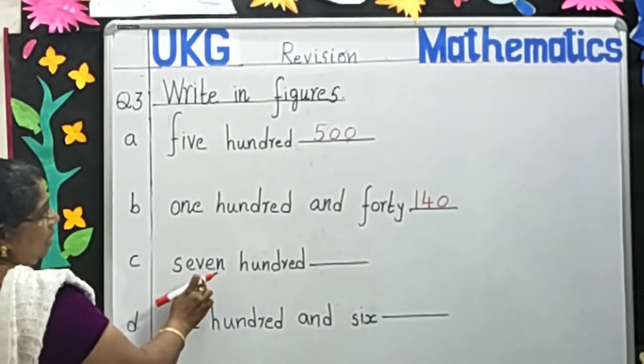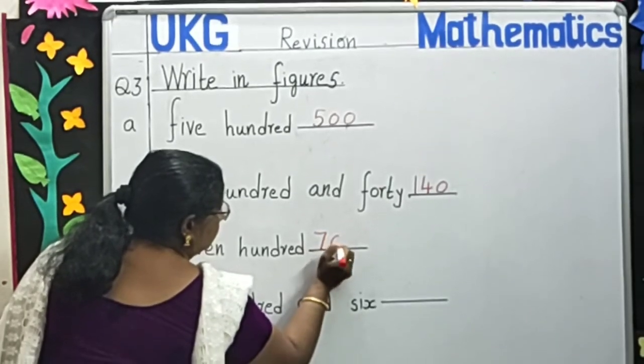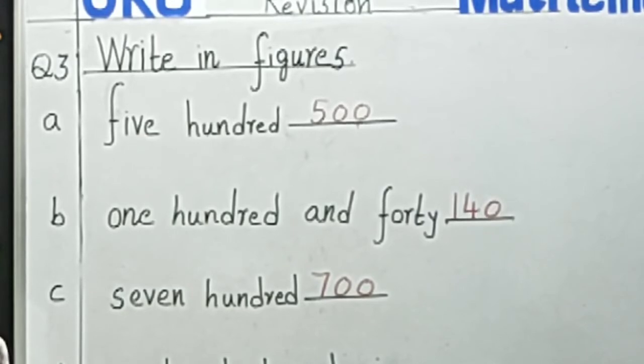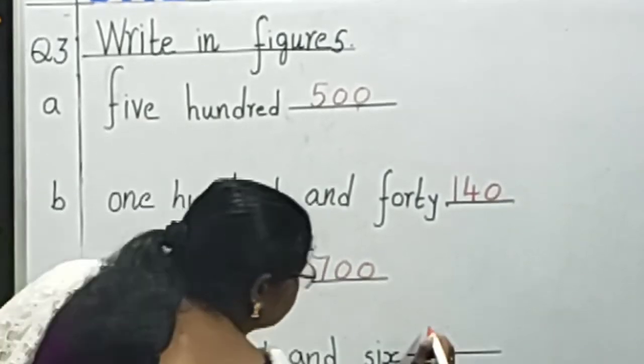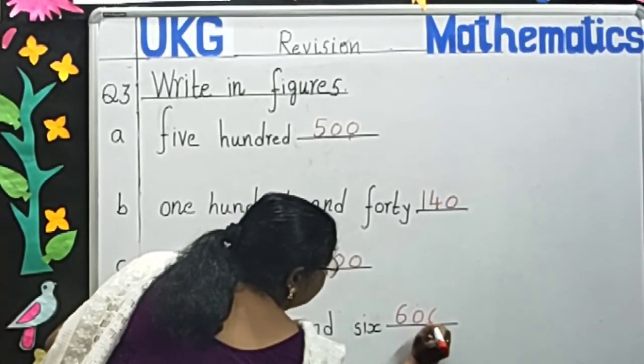Next: seven hundred. 7, 0, 0. Next: six hundred and six. 6, 0, 6.